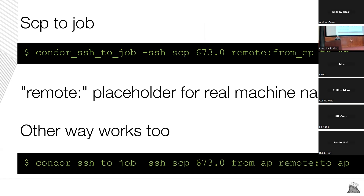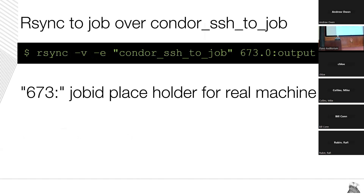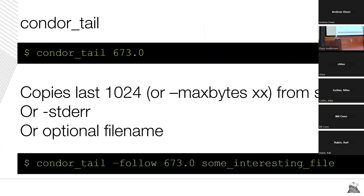If you really want to show off, you can do scp-to-job on top of condor_ssh_to_job — the slides will be up so no need to memorize that. rsync will also work in the same way, though those are a bit tricky and esoteric. A simpler way might be condor_tail, which takes a job ID and copies the last K bytes of data from standard output — or standard error with the -stderr option, or some random file. A lot of people don't know about this; it works generally everywhere and is a great way to peek at how a job is doing mid-run.